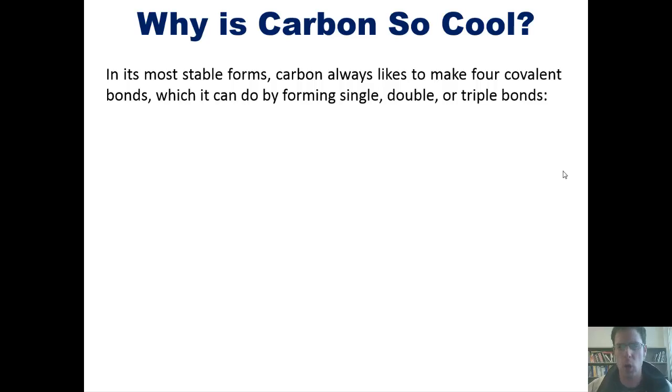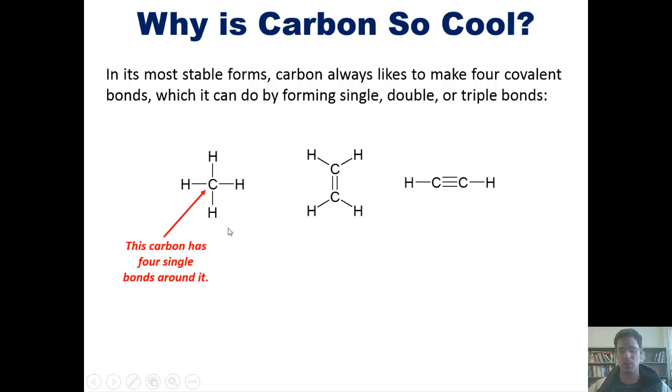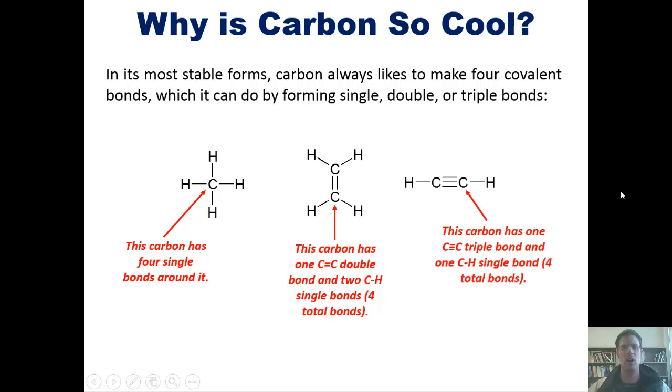So, why is carbon so cool then? Well, in its most stable form, carbon always likes to make four covalent bonds, which it can do by forming single, double, or triple bonds as we show here. This carbon, of course, has four single bonds around it. This carbon has one carbon-carbon double bond and two carbon-hydrogen single bonds around it. And these carbons have one carbon triple and one carbon-hydrogen single bond. Hopefully, you're cool with that.